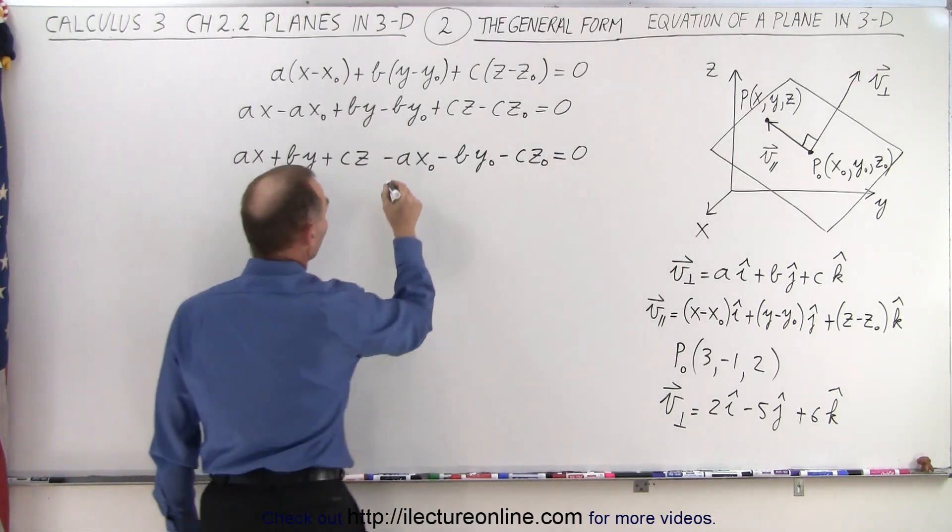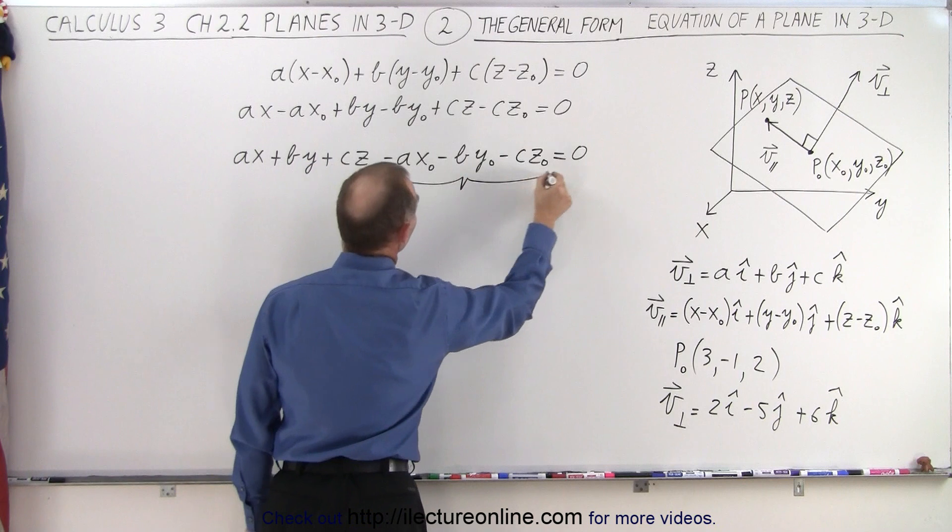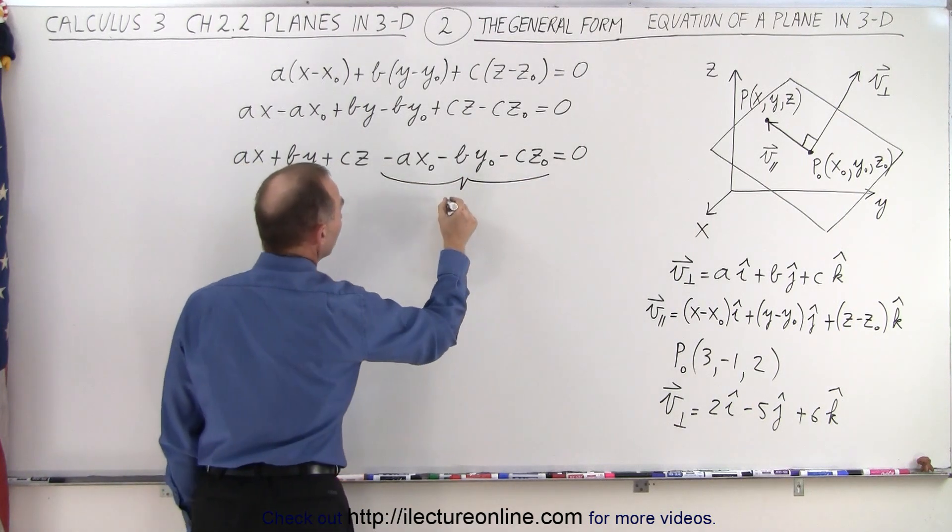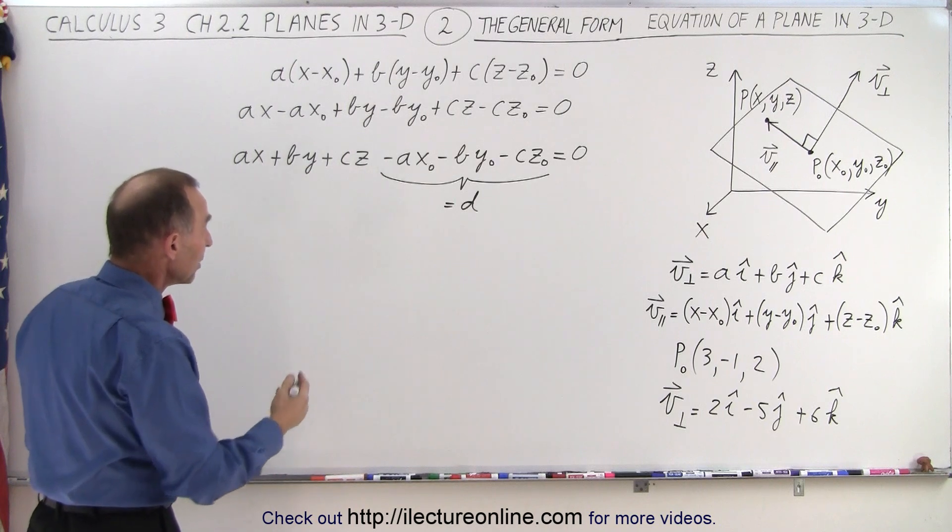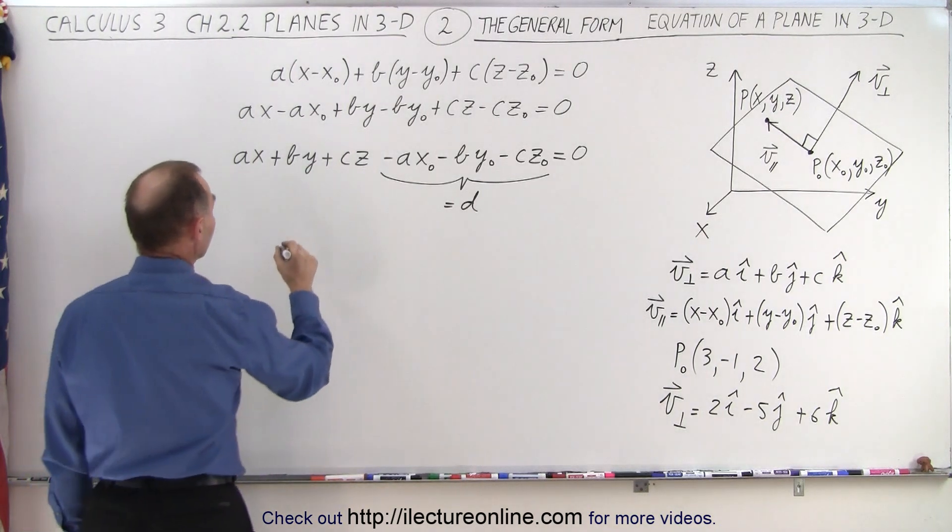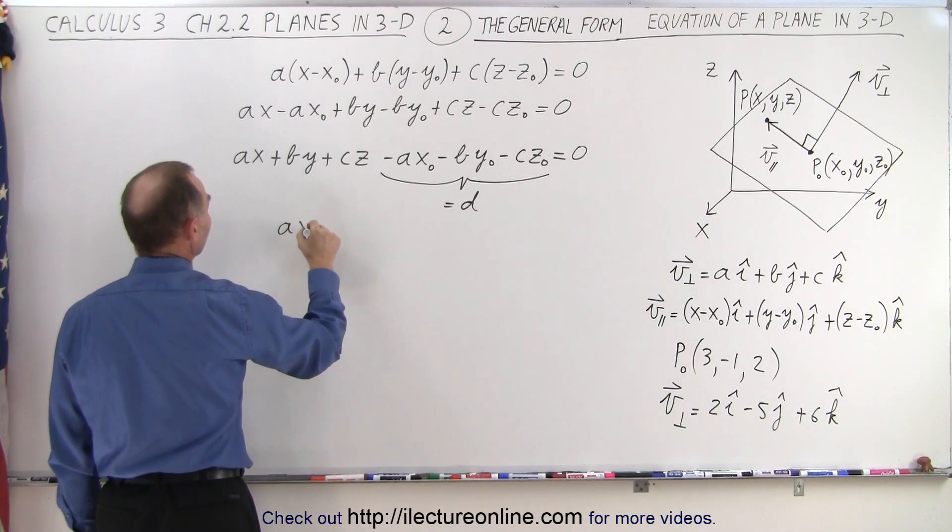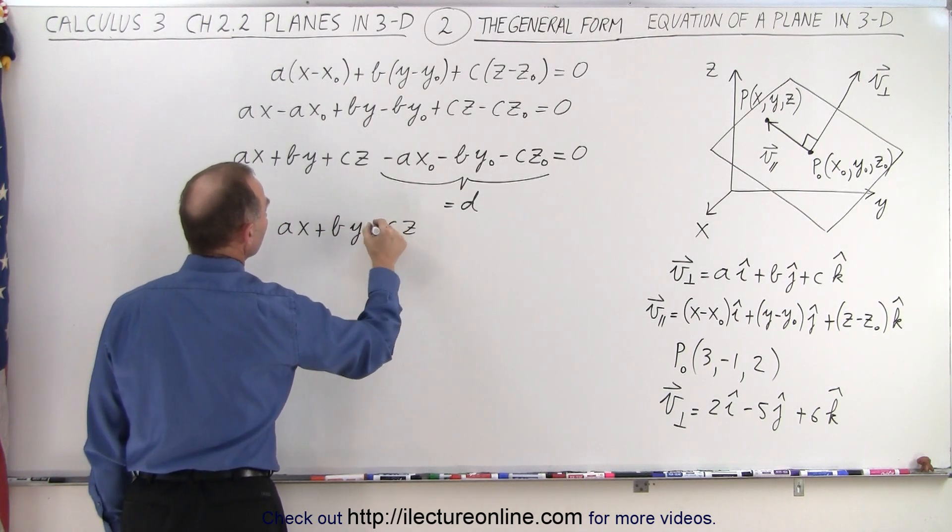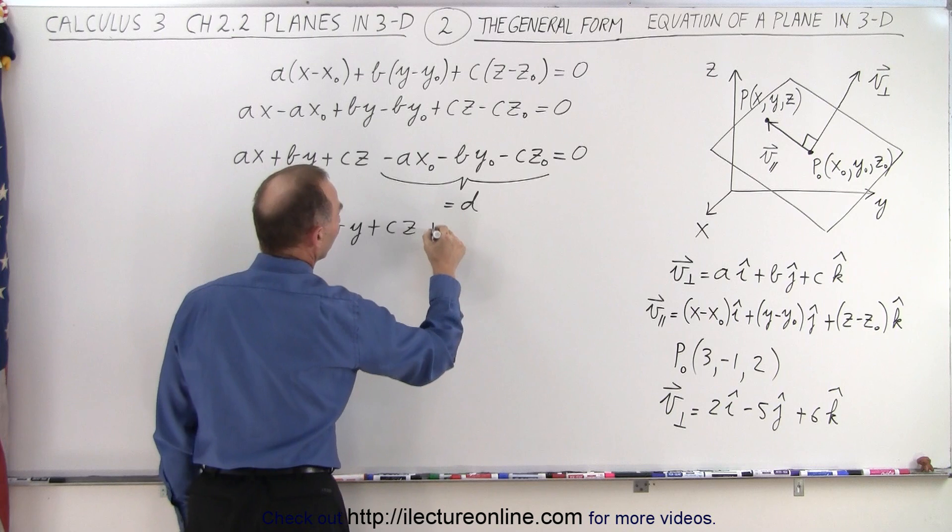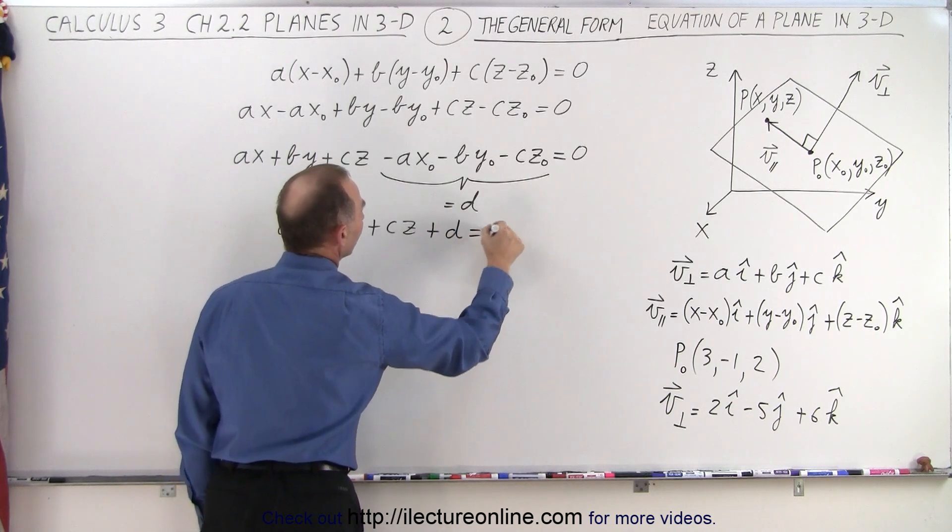Now here, we're going to take this and set that equal to D. So we're going to create another variable called D, and we're going to replace all that by D. So now we're going to write this as Ax plus By plus Cz plus D is equal to zero.